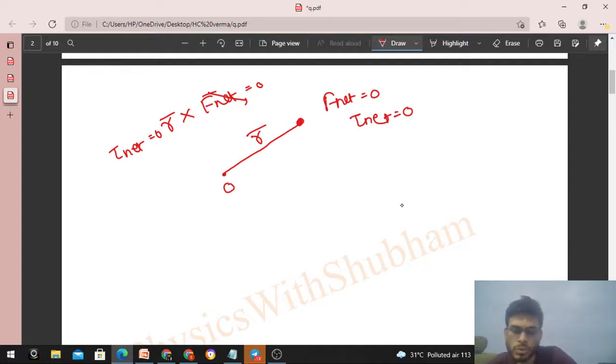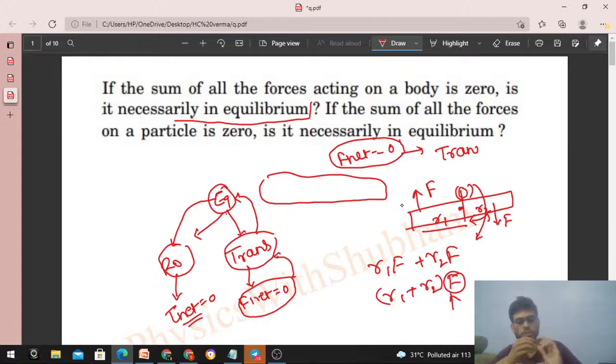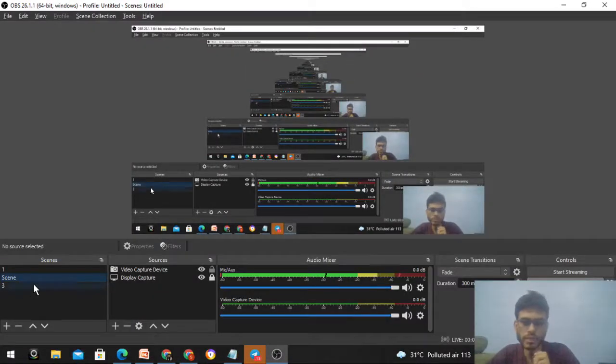So for a particle, it is true that if net force is zero, then it will be in equilibrium. But for a body, we have to check both - torque and force. I think you have understood. Let me know if you still have any confusion, we can discuss further. Okay guys, keep working hard, best of luck, bye!